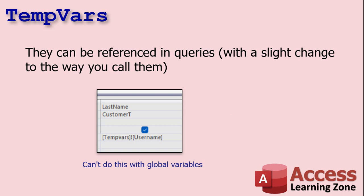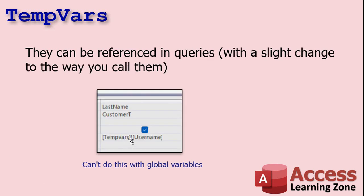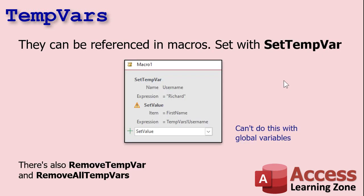Here's another major benefit: you can use TempVars in queries as query criteria. You have to change the way you call them though — instead of the parentheses style, you use the bang operator. But if you do that, you can use TempVars in queries, and again with global variables you'd need a helper function; here you don't. You can also use TempVars in macros — they work with the Set TempVar macro command to set a TempVar, and to get the value you use = TempVars!Username. There are also remove commands to clear them.